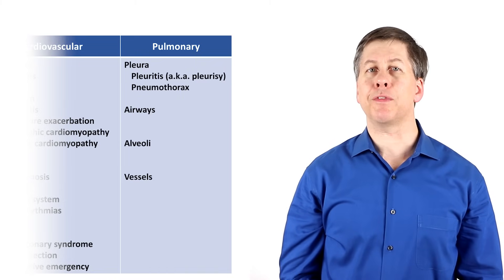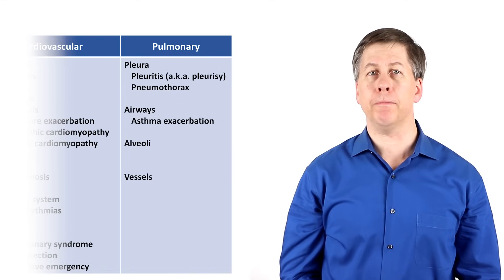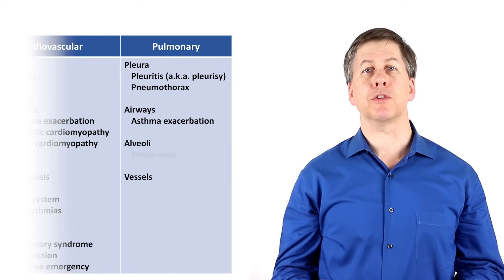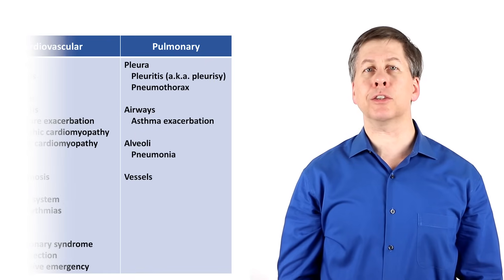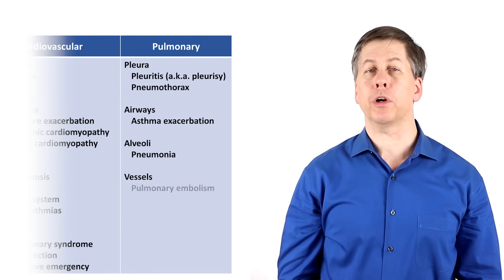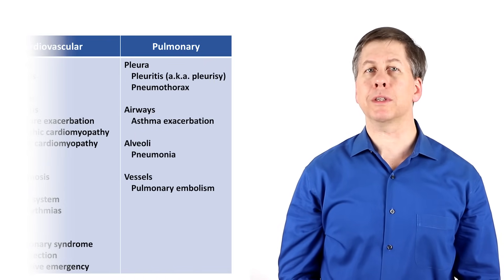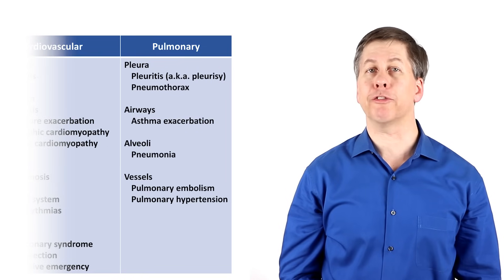Regarding diseases of the airways, asthma attacks frequently cause pain. In the alveoli, there is pneumonia, and in the vasculature, there is both acute pulmonary embolism and an initial presentation of pulmonary hypertension from any cause.